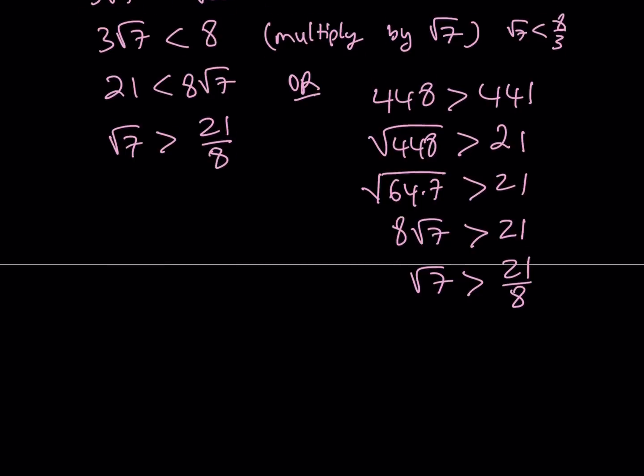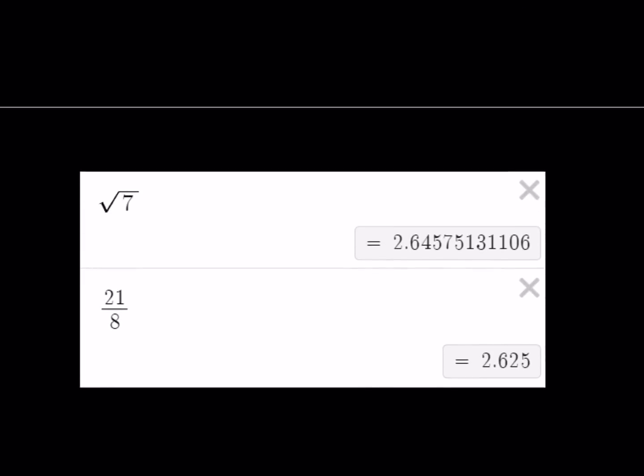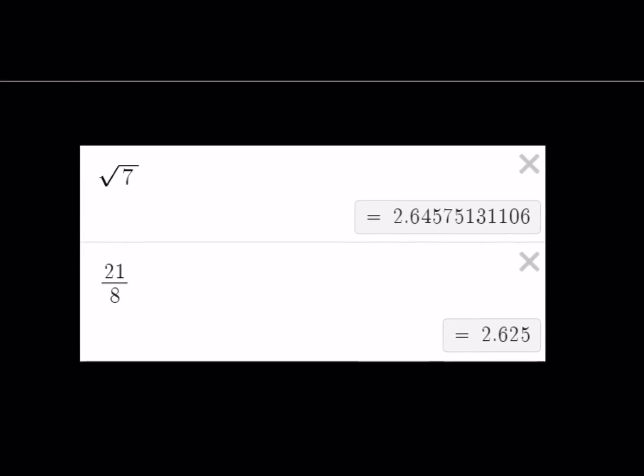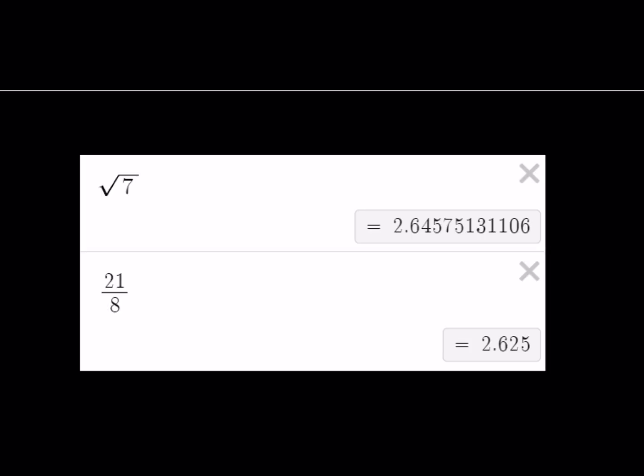Okay, great. So let's go ahead and take a look at some numerical values here. We already said that square root of 7 is going to be greater than 21 eighths. And it actually is. They're pretty close. I mean, not bad, right? But root 7 is greater. Awesome.